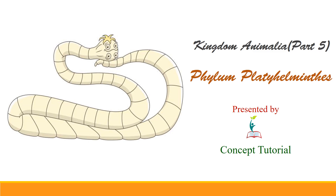The topic of this presentation is Kingdom Animalia part 5, Phylum Platyhelminthes. In this topic we will discuss basic and key features of the Phylum Platyhelminthes. The organisms of this phylum are worm-like and dorso-ventrally flattened. Therefore, these organisms are called flatworms.